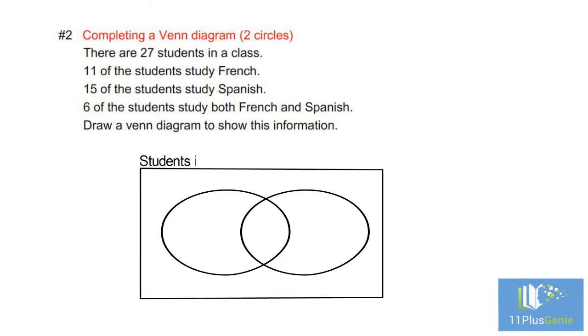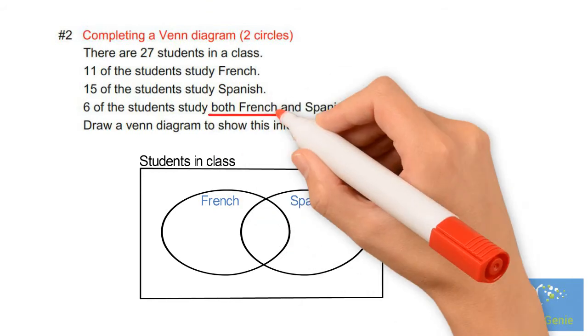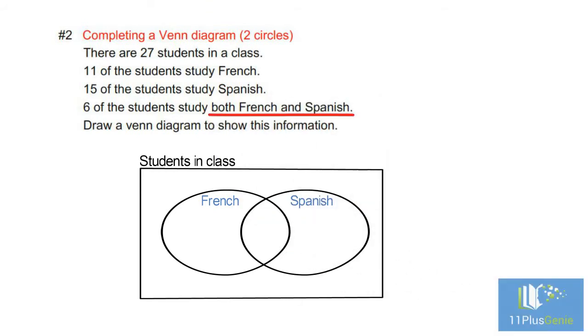When we have to complete a Venn diagram, we always start with the intersection of the sets. 6 students study both French and Spanish, so the 6 goes in the middle.